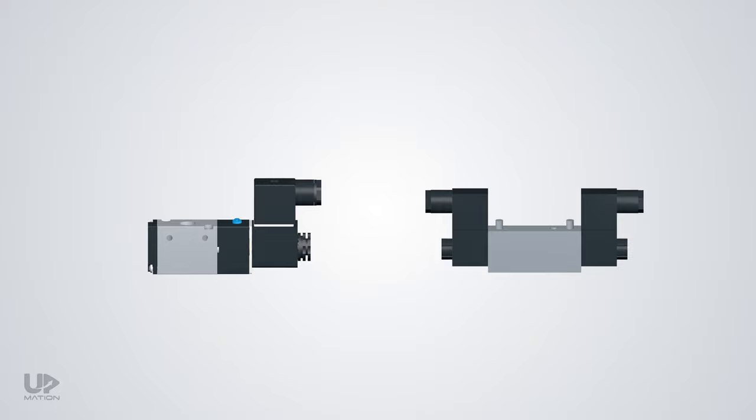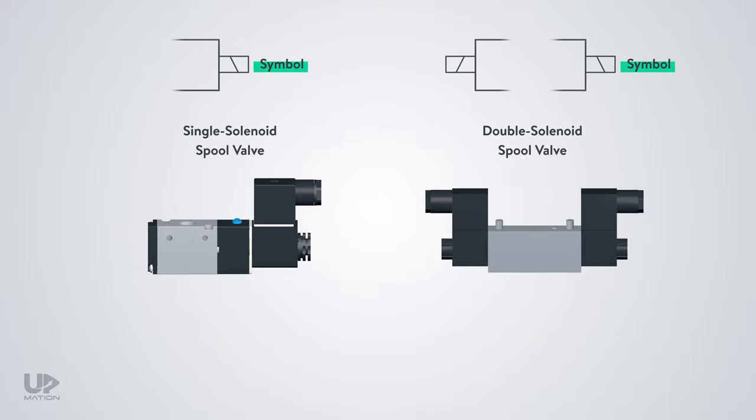In the case of electrical actuation of a directional control valve, we need to use a solenoid on one or both ends of the valve. Commonly, the solenoid actuated spool valves are simply called solenoid valves.